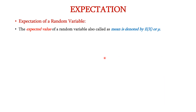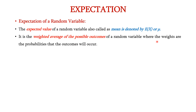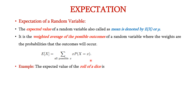The expected value of a random variable, also called as mean, is denoted by E of x or mu. It is the weighted average of the possible outcomes of a random variable, where the weights are the probabilities that the outcomes will occur. It can be expressed as E of x is equal to summation of x into P of x equal to x.